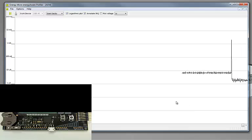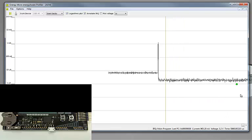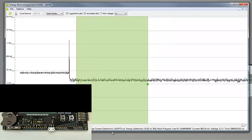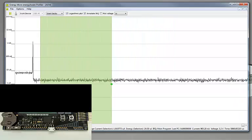First, I will try to measure the average current consumption by placing two markers like this. And then the average consumption is shown down here. It is around 2 microamps.